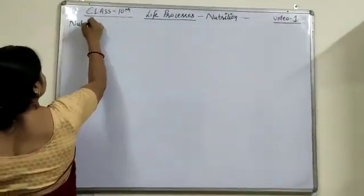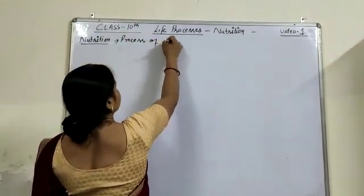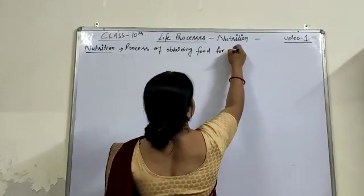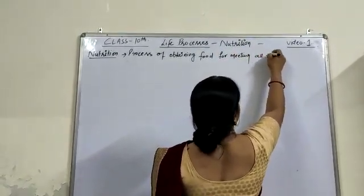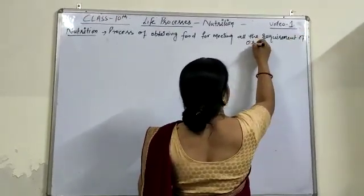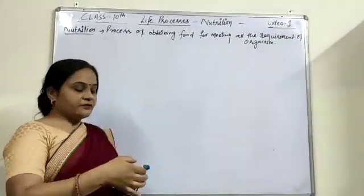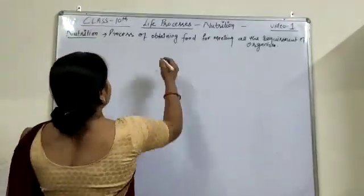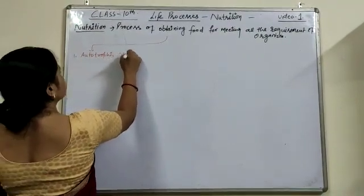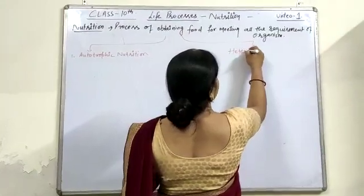Nutrition is the process of obtaining food for meeting all the requirements of an organism. This nutrition process is divided into two different parts: the first is autotrophic nutrition and the second is heterotrophic nutrition.